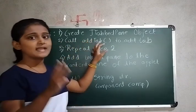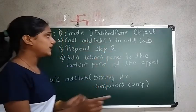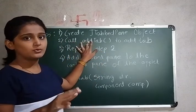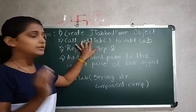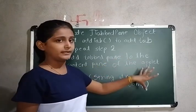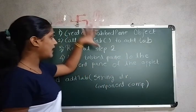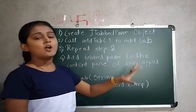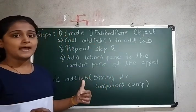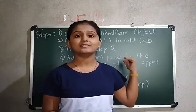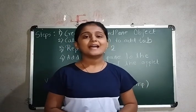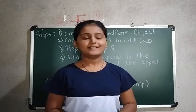The next step is to repeat the addTab method as many times as required. In the previous example I used three tabs, so I will call that method three times. The last step is to add the JTabbedPane to the content pane of the applet — whatever we have created should be added to the content pane. Thank you so much for watching this video.